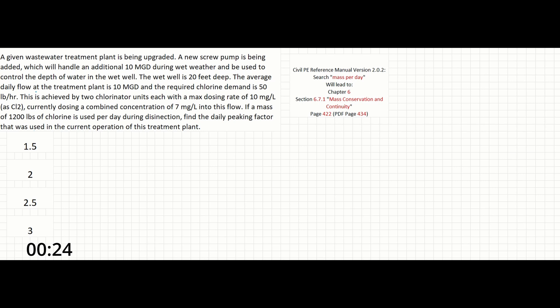The average daily flow at the treatment plant is 10 MGD and the required chlorine demand is 50 pounds per hour. This is achieved by two chlorinator units, each with a max dosing rate of 10 milligrams per liter as Cl2.